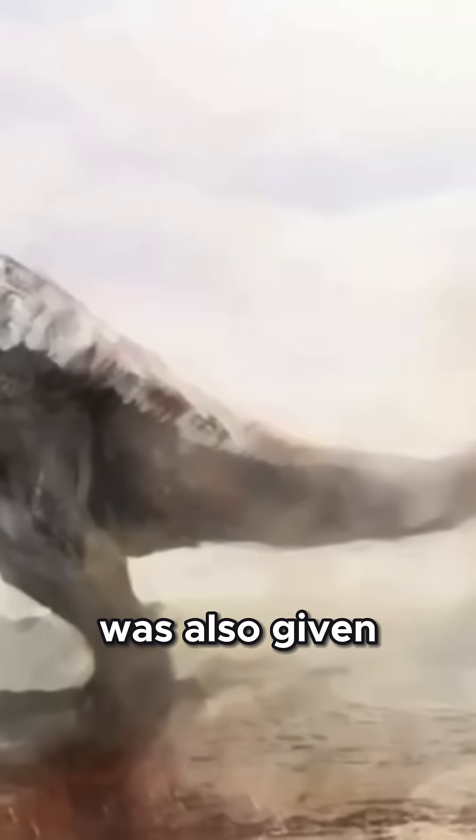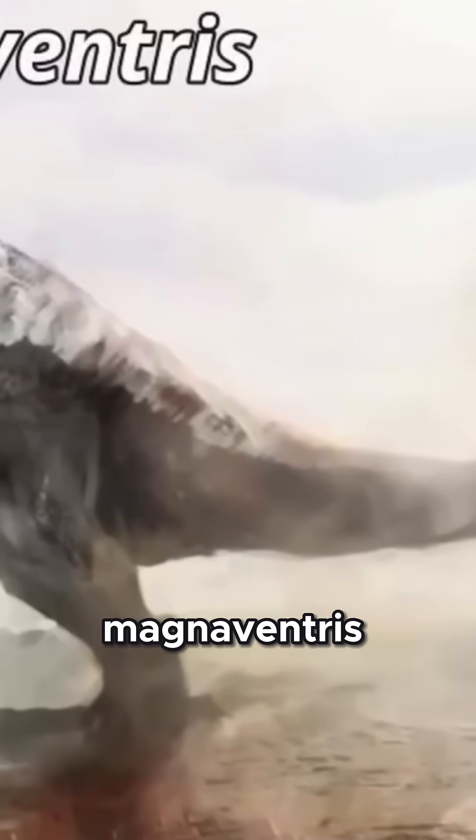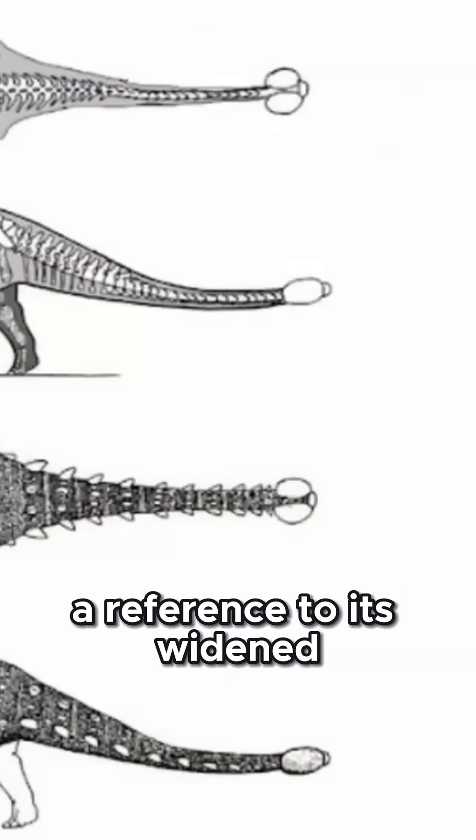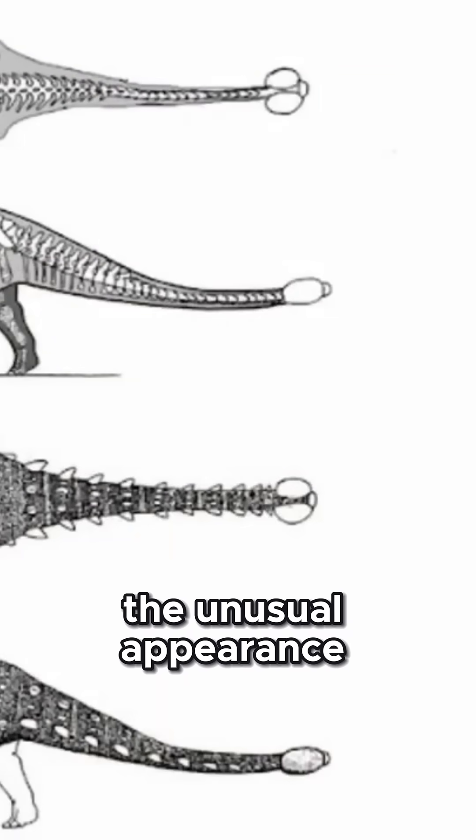This type specimen was also given the scientific name Magnaventris, meaning Great Belly, in reference to its widened midsection which gave it quite the unusual appearance.